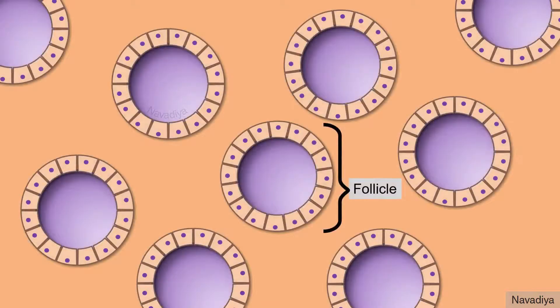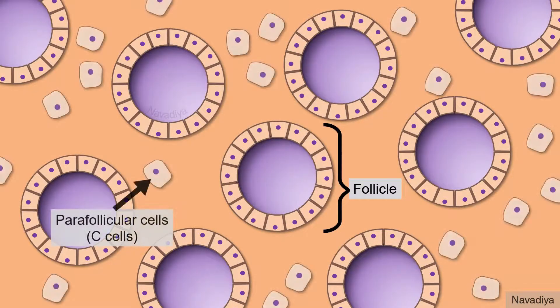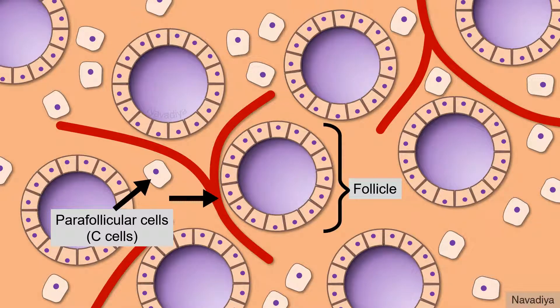In thyroid gland, we have follicles, parafollicular cells or C-cells and these are blood vessels. This is basic histology of thyroid gland.